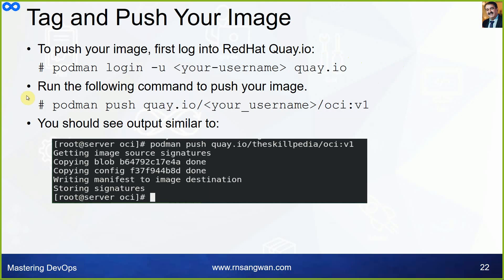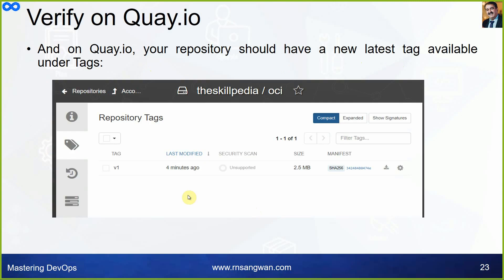To tag and push your image: first log in with podman login -u your-username quay.io, then run podman push quay.io/username/imagename:tag. The image will be pushed to quay.io — precisely what I showed at the beginning of this session, where the images on my quay.io account were ones I pushed from my local system.